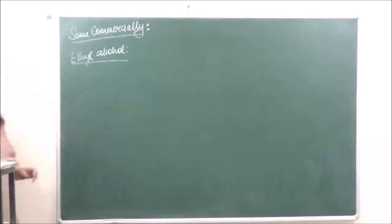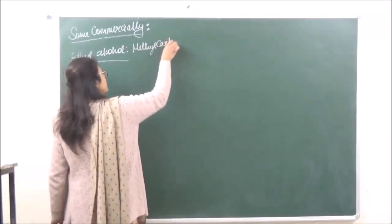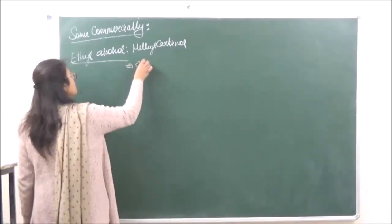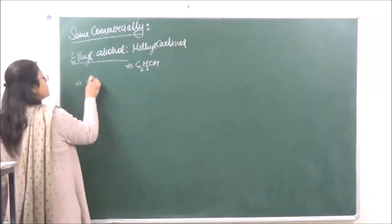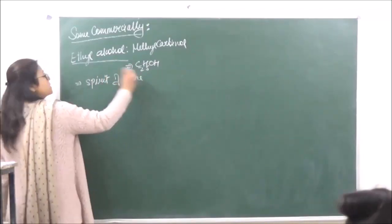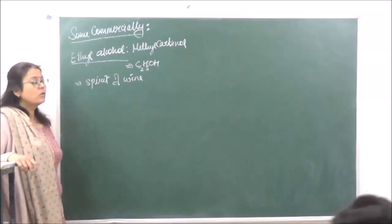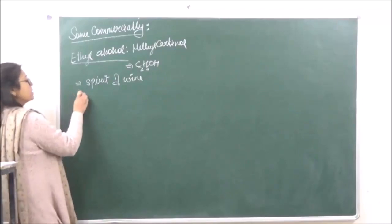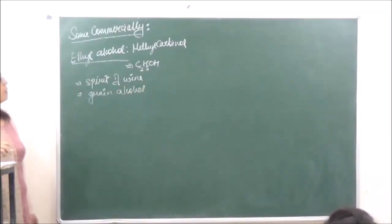Next, ethyl alcohol — also known as methyl carbinol — has the formula C₂H₅OH. It is one of the most important members of the homologous series of alcohols. It is also known as spirit of wine, because most liquors or wine contain ethyl alcohol as one of the major components giving the intoxicating effect. It is also known as grain alcohol because it is generally formed by the fermentation of grain.